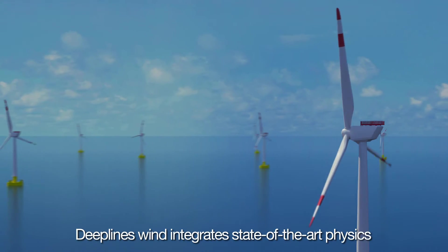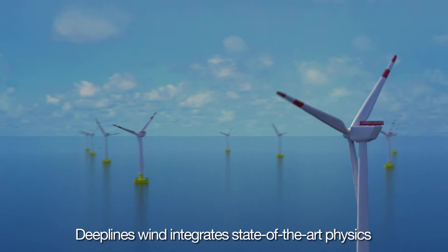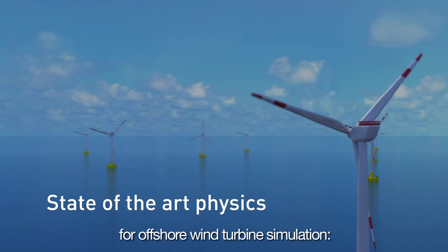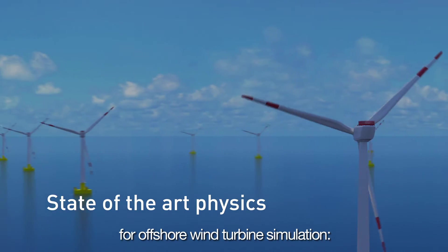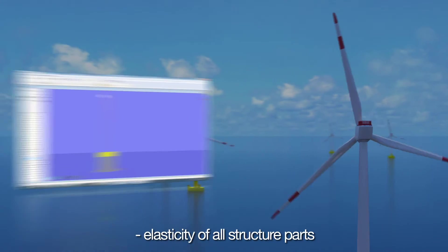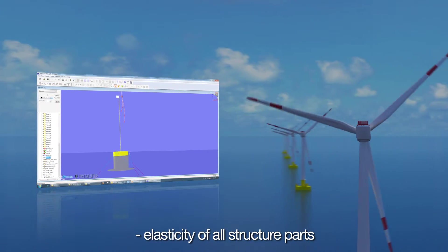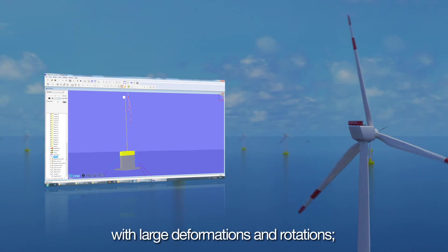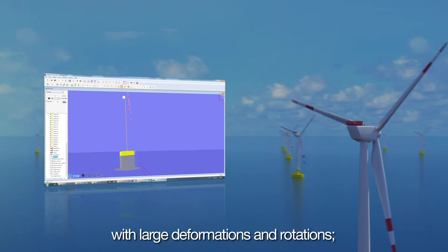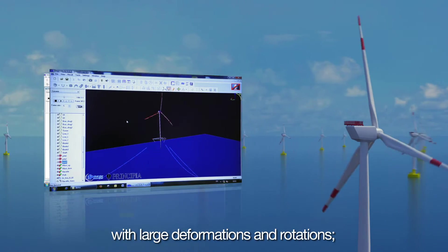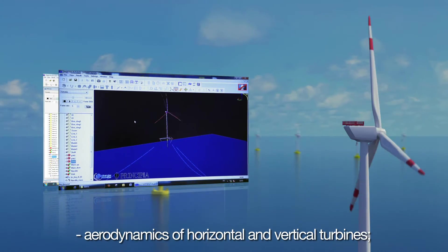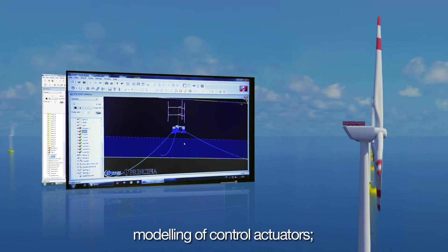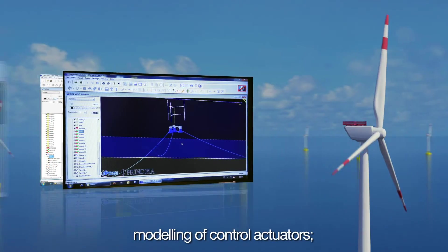DeepLine Wind integrates state-of-the-art physics and couplings required for the simulation of offshore wind turbines: the elasticity of all the structure parts using finite element method with large deformations and rotations, the aerodynamics of horizontal and vertical turbines, and the modeling of control actuators.